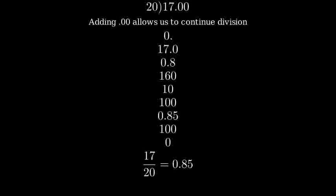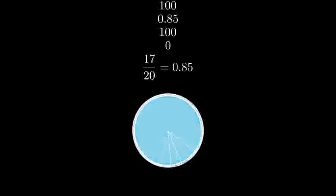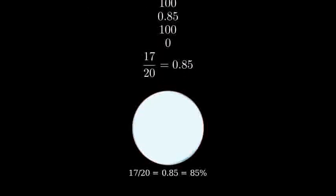Therefore, 17/20 is equal to 0.85. To visualize this, imagine a pizza cut into 20 equal slices. If you take 17 of those slices, you would have 85% of the whole pizza or 0.85.